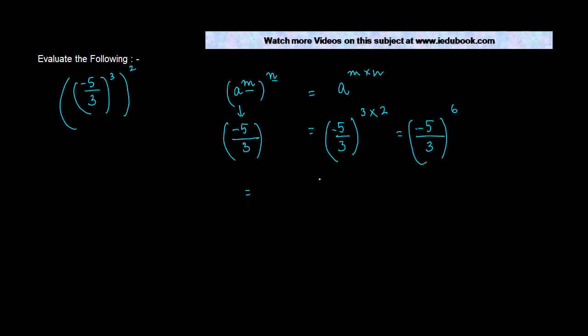Now if you want to solve this, it's pretty easy. a upon b to the power n is equal to a to the power n upon b to the power n. So minus 5 to the power 6 upon 3 to the power 6. Now, 5 to the power 3 is 125, so I can write this as minus 125 times minus 125. Similarly, 3 to the power 3 is 27.